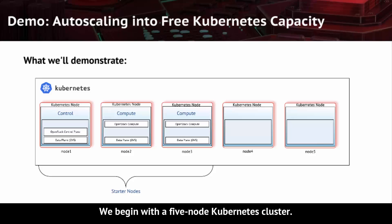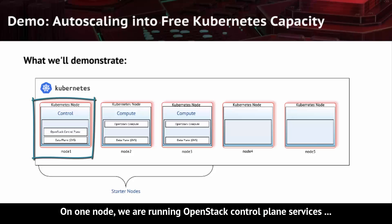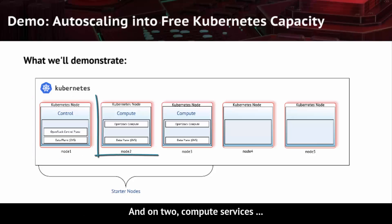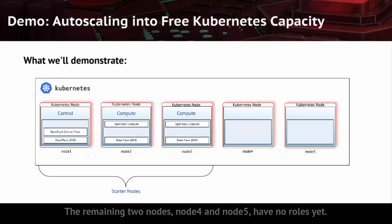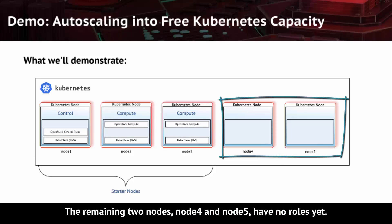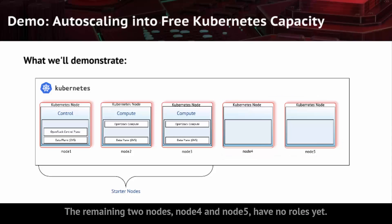We begin with a five-node Kubernetes cluster. On one node, we're running OpenStack control plane services, and on two, compute services, along with OVS networking services. The remaining two nodes, node 4 and node 5, have no roles yet.